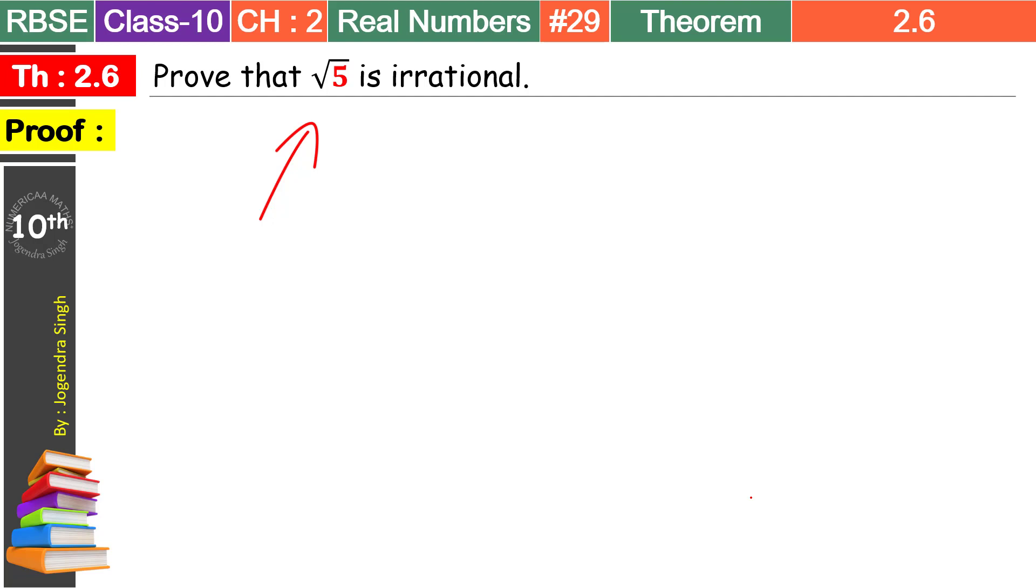Uske baad thoda sa hum usse process karenge. Agar humari cheez contradictory aajati hai, humari results contradiction create karate hain, that means impossible result humko milte hain, to humara yeh rational number jo humne suppose kiya tha wo thik nahi hai. Aur root 5 humara kya hoga, irrational. To contradictory method hum use karenge is jagah. Aur yahan hum long division method use nahi karenge. Under root lene ka theorems ko prove karne ke liye. Jo inductive method hota hai, hum usse use karenge step by step.